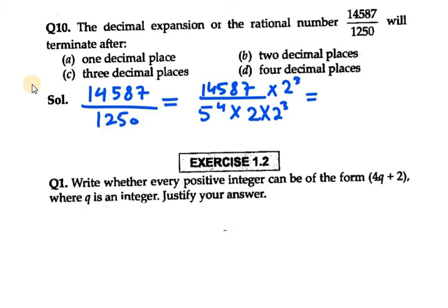So 14587 into 8 is 116696 over, we have, now 2 into 2 raised to power 3 can be written as 2 raised to power 4. So, 5 raised to power 4 into 2 raised to power 4. So the final will be...